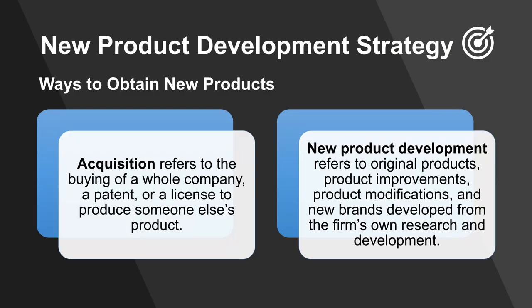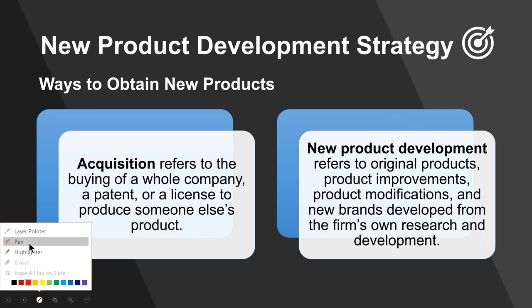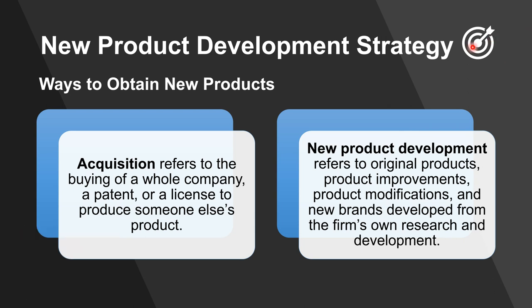Let's get started with new product development strategy. There are two ways to obtain new products. One is through acquiring — a lot of companies acquire other companies to get their patents and licenses. The one we're talking about more today is new product development, which is producing a product, whether internally or externally, but you produce it yourself. Anytime you see a target icon, make sure you really understand these concepts because they'll be in the quizzes and exams.